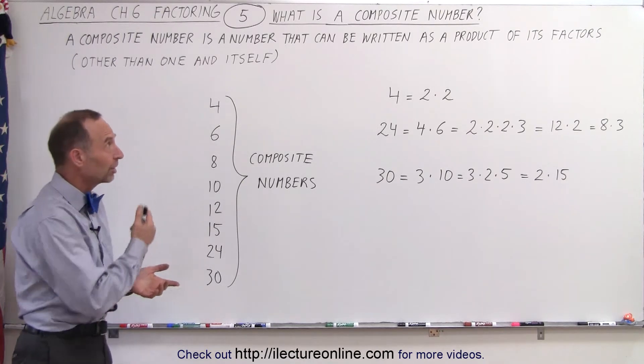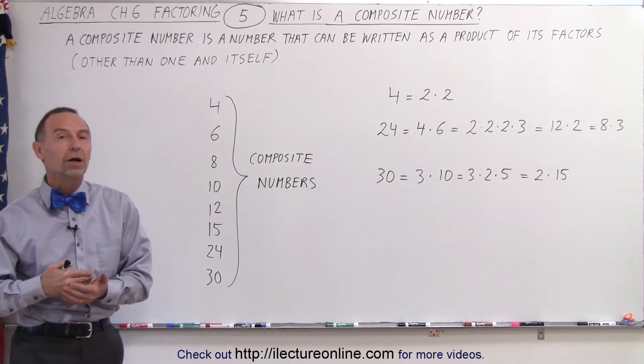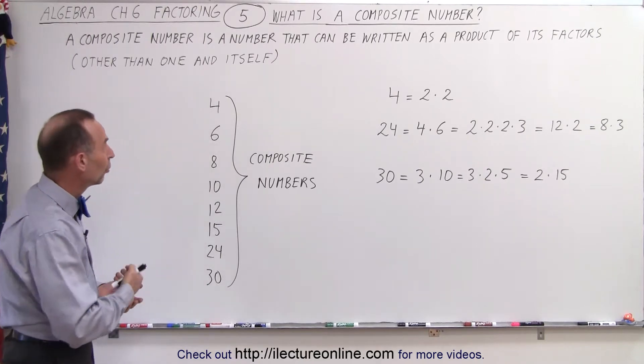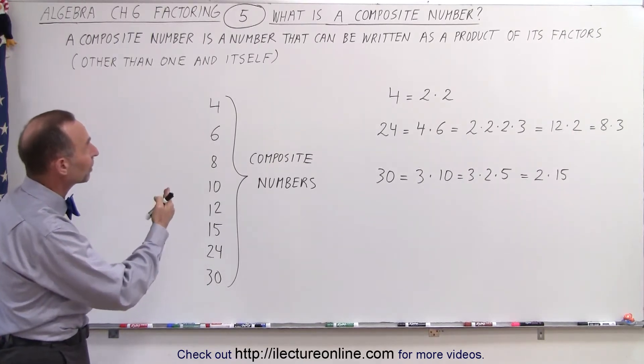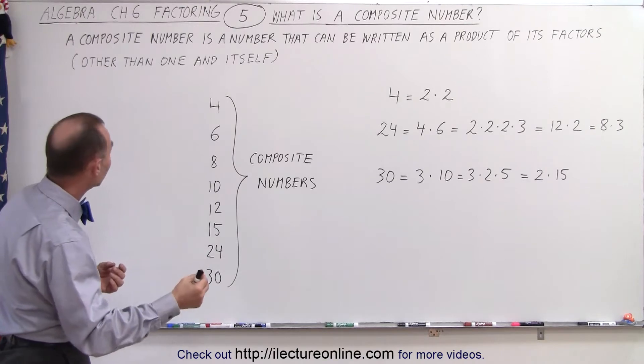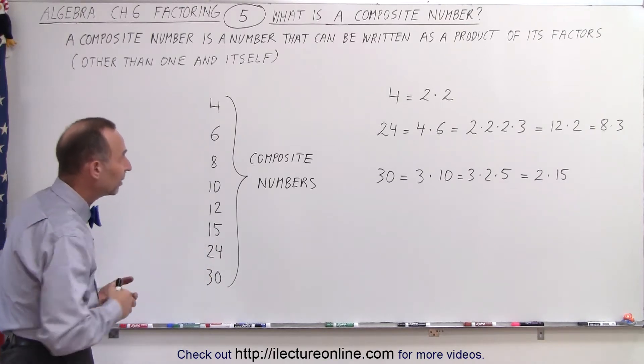Well, you guessed it by looking at the title, they're called composite numbers. So a composite number is a number that can be written as a product of its factors other than one and itself.